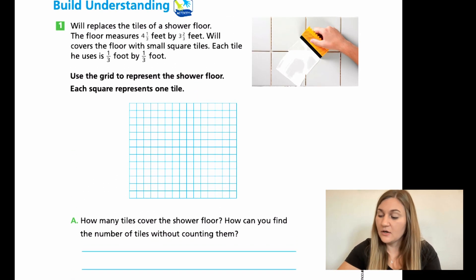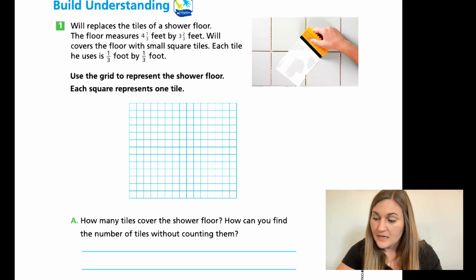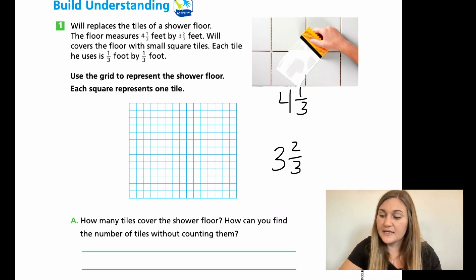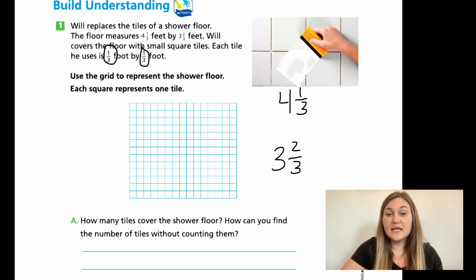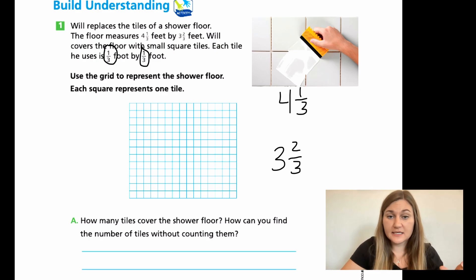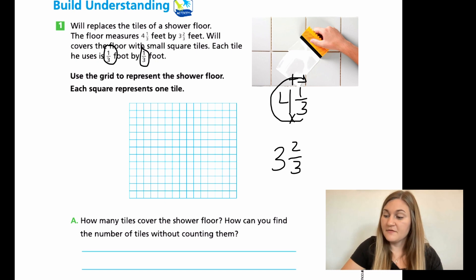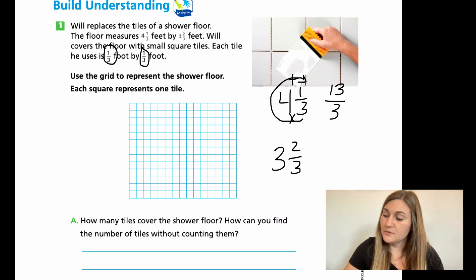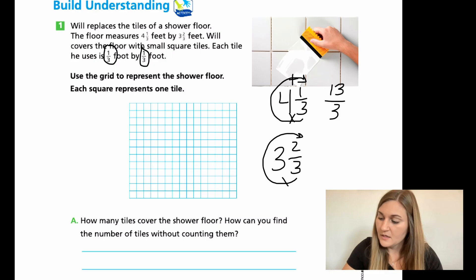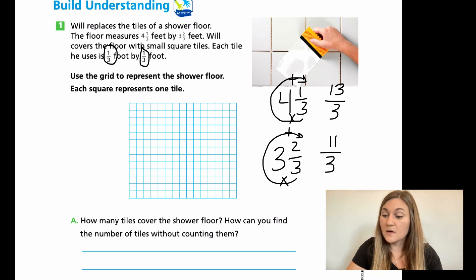Great work. Let's go through this. The whole entire floor measures four and one-third by three and two-thirds, and each tile is one-third by one-third. We want to figure out in my four and one-third how many one-third pieces, or how many tiles, I can lay down. I'm going to turn it into an improper fraction — start at your denominator and work your way up: multiply then add. Three times four is 12, plus one is 13. So I can lay 13 of the one-third tiles going this way. For three and two-thirds: three times three is nine, plus two is 11. So going the other way, I can fit 11 tiles.